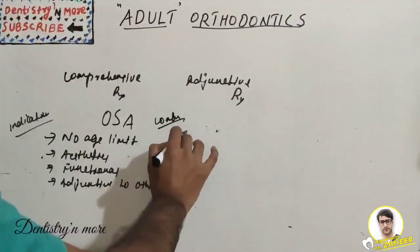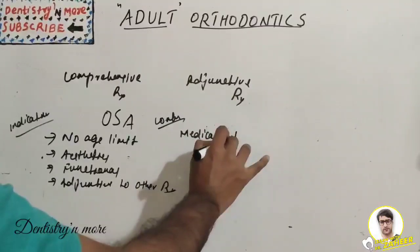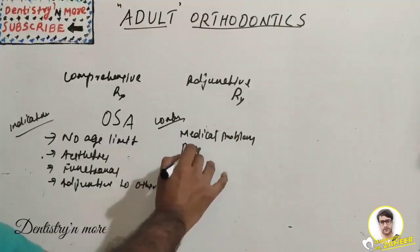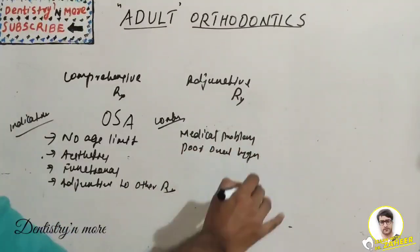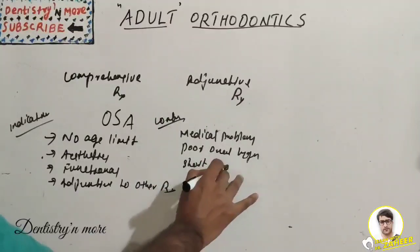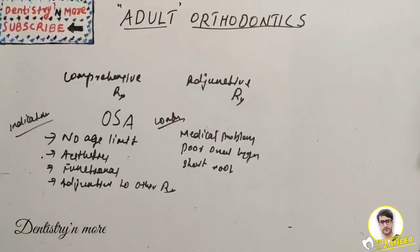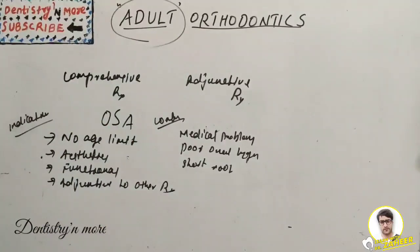Contraindications for adult orthodontics include medical problems, poor oral hygiene, and short roots. These are the main contraindications for adult patients.